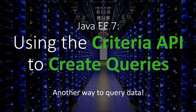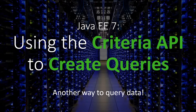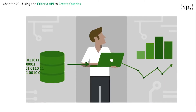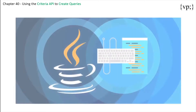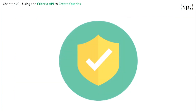Hello everybody and welcome to your 40th chapter in your Java 8.7 tutorial series. In this tutorial we'll be talking about the Criteria API. The Criteria API is used to define queries for entities and the persistent state by creating query defined objects, which is very similar to what JPQL does. The part where they differ: Criteria queries are written using the Java programming language APIs, are type safe, and are portable.